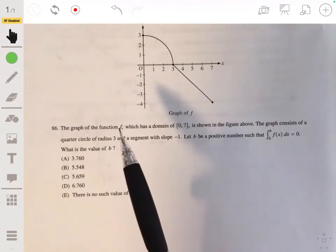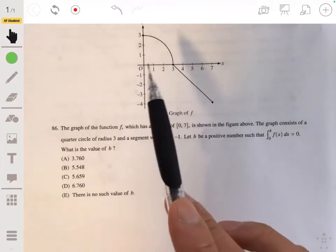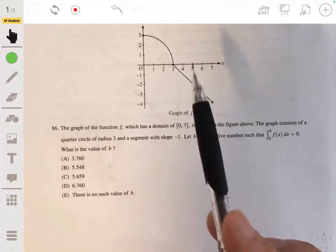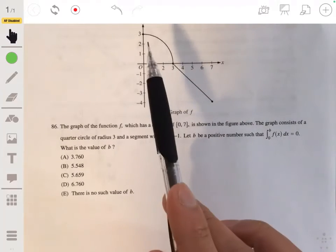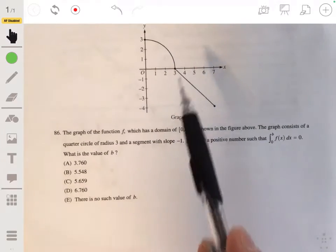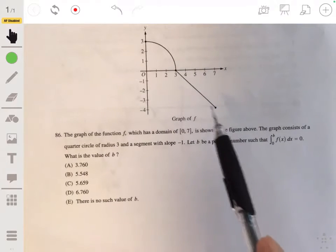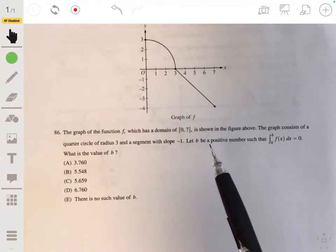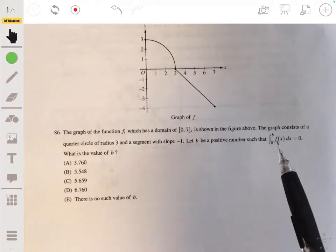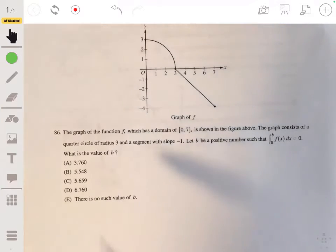All right. In 86, we have the graph of the function f with domain 0 to 7 shown here, and it consists of a quarter circle and a segment with slope negative 1. Let b be a positive number such that the integral from 0 to b of f of x dx equals 0. What is the value of b?